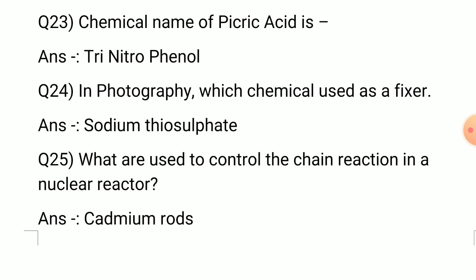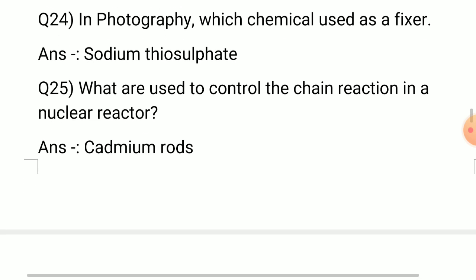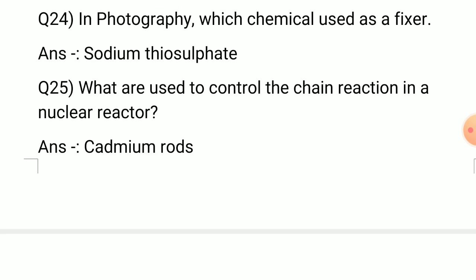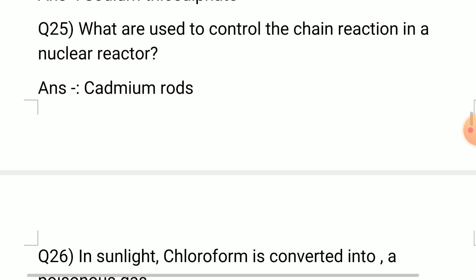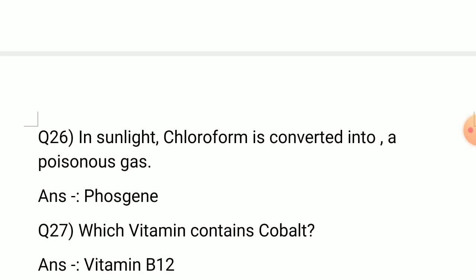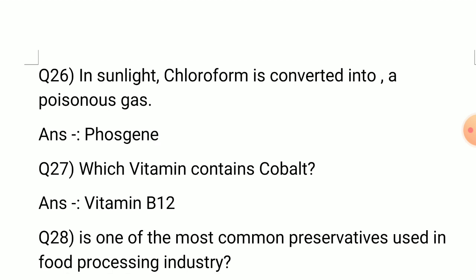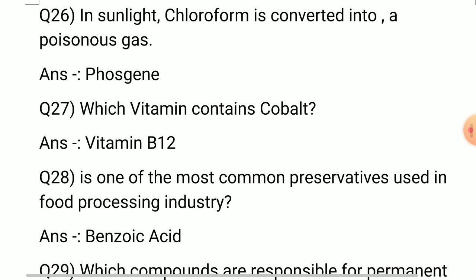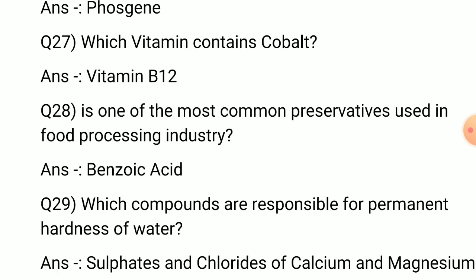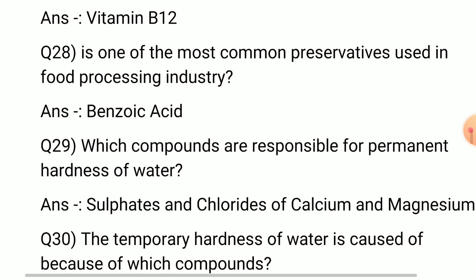Question number 24: In photography, which chemical is used as a fixer? Answer: Sodium thiosulfate. Question number 25: What is used to control the chain reaction in a nuclear reactor? Answer: Cadmium rods.